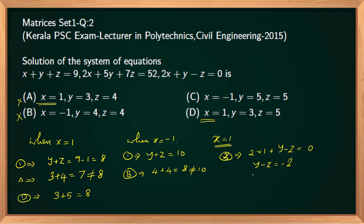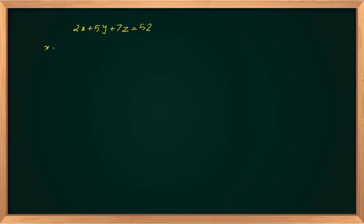Substituting y=3, z=5 into y minus z gives 3 minus 5 equal to −2, satisfying equation 3. For option C with x=−1, y minus z equals +2, but 5 minus 5 equals 0, not 2, so C cannot be the solution. Checking equation 2 for option D: 2(1) plus 5(3) plus 7(5) equals 2 plus 15 plus 35 equal to 52. Correct option is option D.